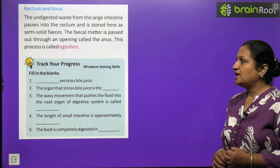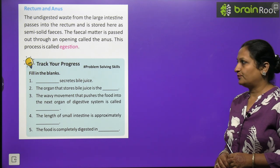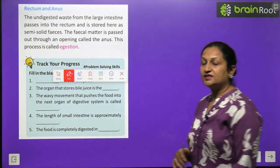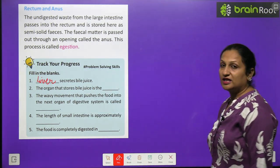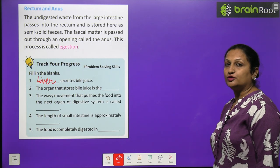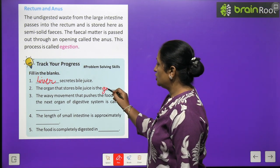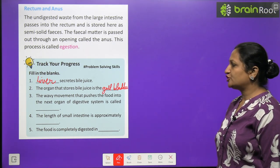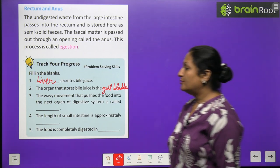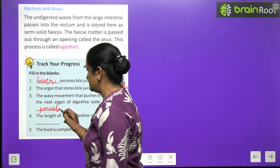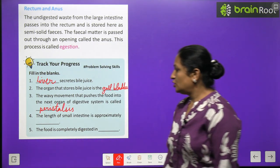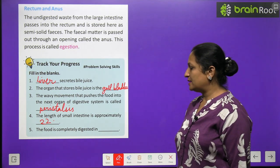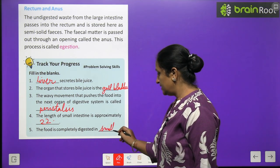Track your progress: The liver secretes bile juice. Extra bile juice is stored in the gall bladder. The wavy movement that pushes food through the digestive system is called peristalsis. The length of the small intestine is approximately 22 feet. Food is completely digested in the small intestine.